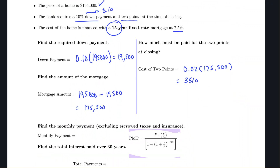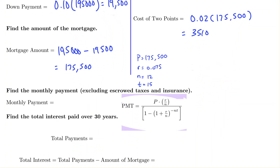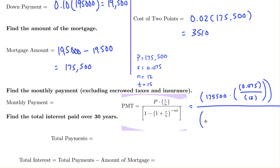For the monthly payment, the principal is $175,500, the interest rate is 0.075, the number of payments per year is 12, however the term is now 15 years. Writing these values into the formula with all needed parentheses, we can then type this into the calculator.